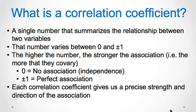So what is a correlation coefficient? It is a single number that summarizes the linear relationship between two variables. That number varies between negative 1 and positive 1. The higher the number, the stronger the association or relationship, or the more they co-vary. A correlation coefficient close to 0 means there is little to no association between the two variables. A correlation coefficient close to plus or minus 1 means there is an almost perfect association. Each correlation coefficient gives us a precise strength and direction of the linear relationship between two variables.